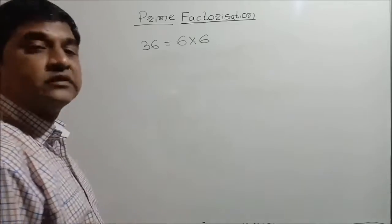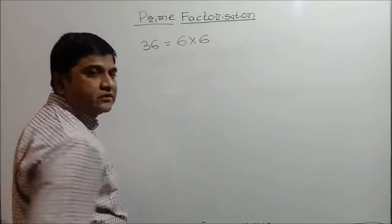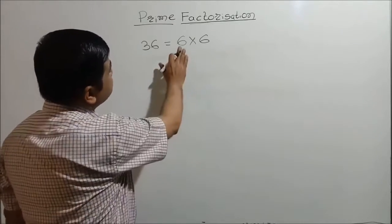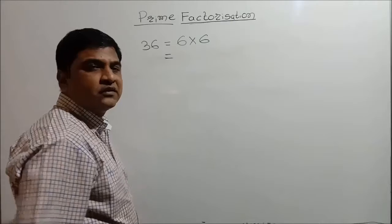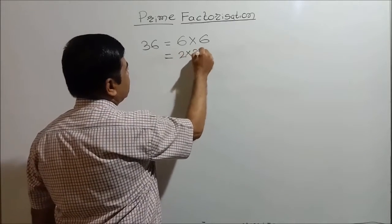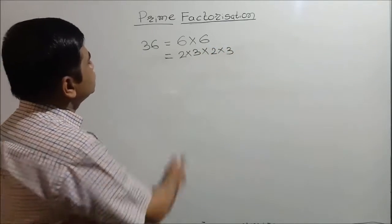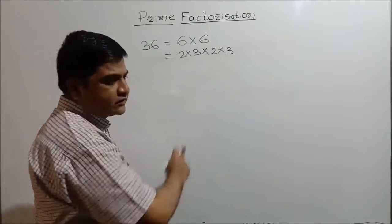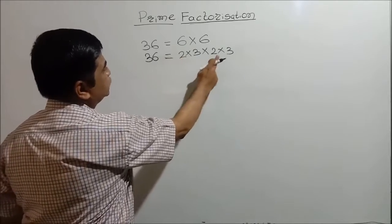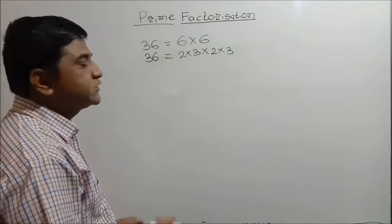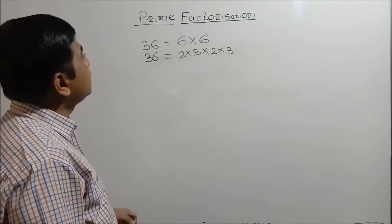We are going to show a number as a product of prime numbers, taking the example of 36. 36 can be expressed as 6 multiplied by 6, but both 6s are composite numbers. So I split each 6 as 2 multiplied by 3. Now in this case, all the numbers — 2, 3, 2, 3 — are prime numbers. We have expressed 36 as a multiplication of prime numbers. This is known as the prime factorization of 36.